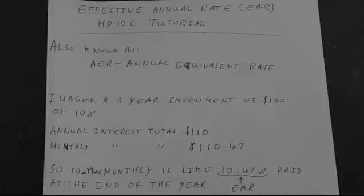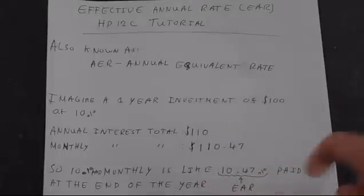Let's look at how we could calculate this using your HP12C financial calculator. We'll use this example here, and we expect to get 10.47% at the end.